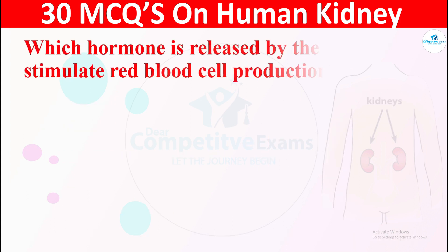Question 20: Which hormone is released by the kidneys to stimulate red blood cell production? That hormone is erythropoietin, released by the kidneys to stimulate red blood cell production.